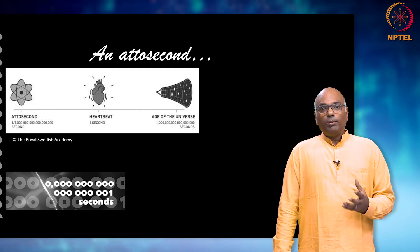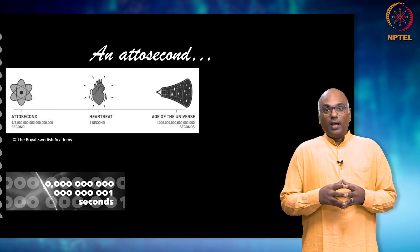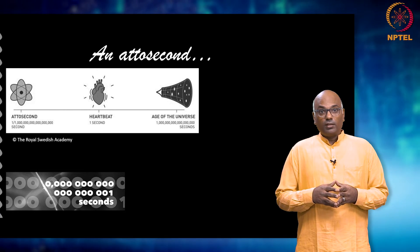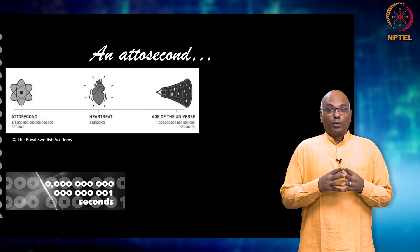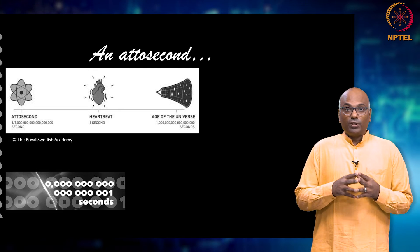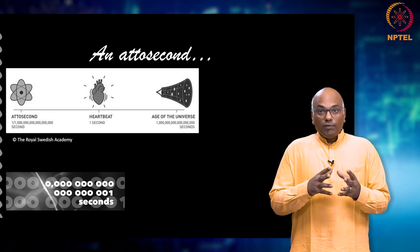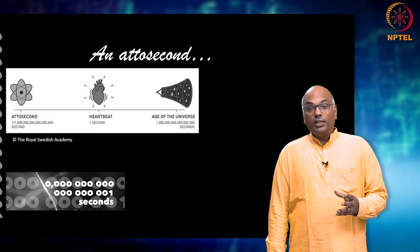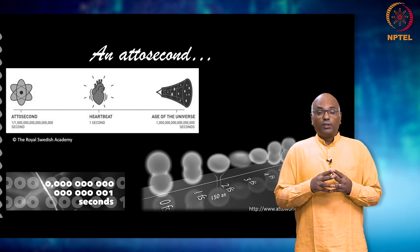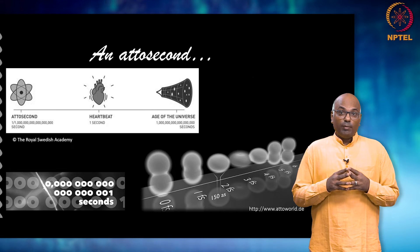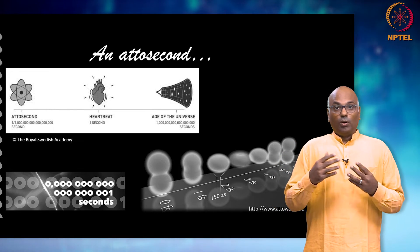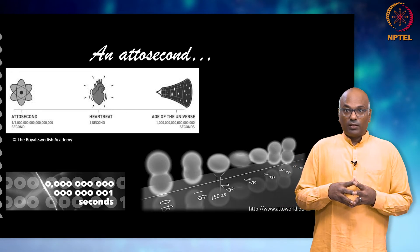This is indeed an extremely short duration of time, and humankind — scientists and researchers — have succeeded in producing repeatable, controllable light pulses of this duration. With these light pulses, we can observe, measure, and even control the dynamics of electrons in atoms, molecules, or even condensed phase matter.